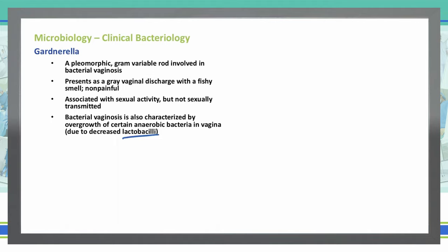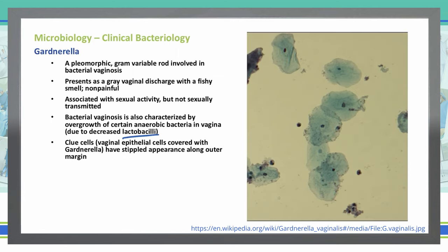What are we going to see with Gardnerella under the microscope? This is a picture of what you're going to see — clue cells. These are vaginal epithelial cells that are covered in Gardnerella. They have a stippled appearance along their outer margin, as you can see in that picture.